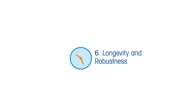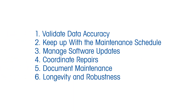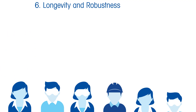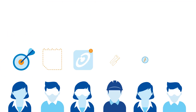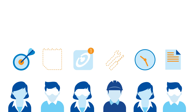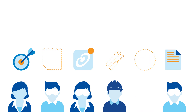Number six: longevity and robustness. Ensure that the people involved have the skill set and resources to execute their tasks quickly, and have a backup plan in the event of personnel changes.